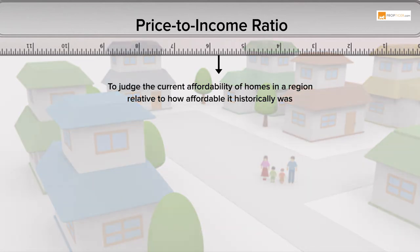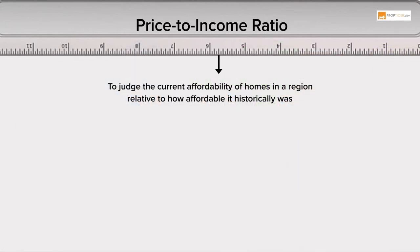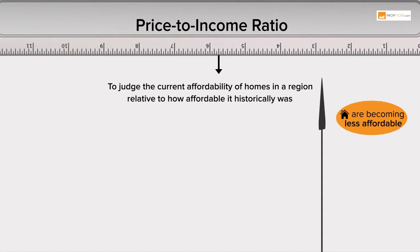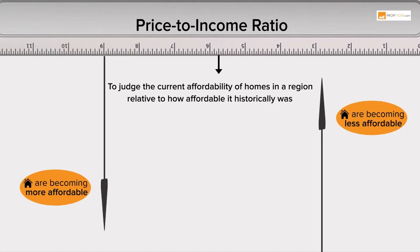If the price to income ratio is going up, it means that homes are becoming less affordable. If the price to income ratio is declining, it means that homes are becoming more affordable.